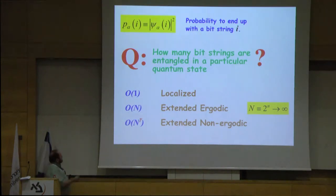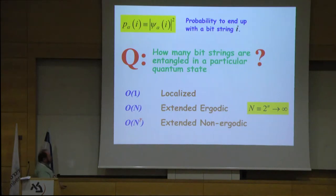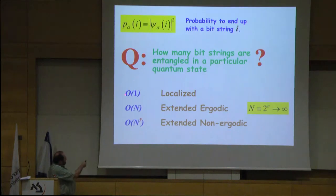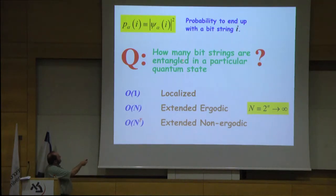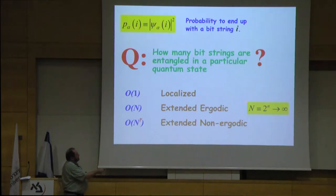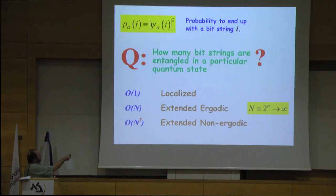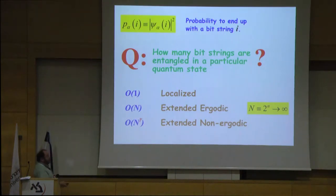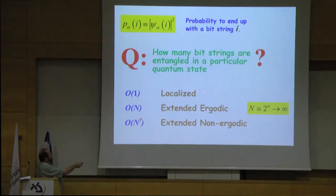The question you can ask is: how many bit-string states do you use to create a particular quantum state of the whole system? How many of these states are entangled into this particular quantum state? It looks natural to think that if there are few of them, entanglement is weak. You can classify the answers into three groups. If you use just one, five, or ten different bit strings to form this quantum state, I will call it a localized state.